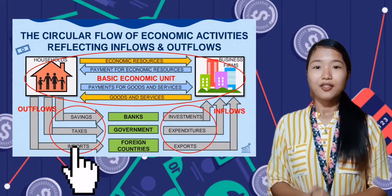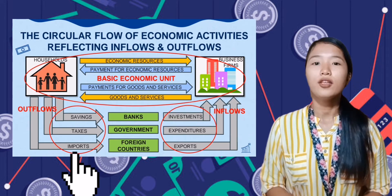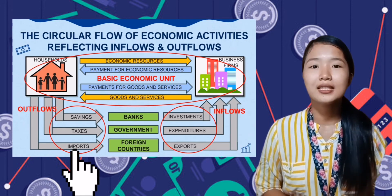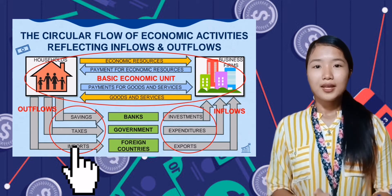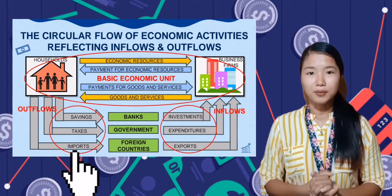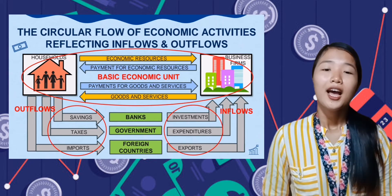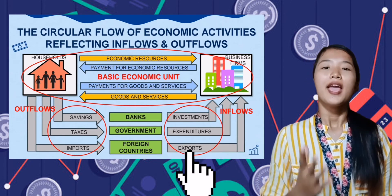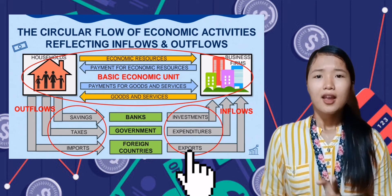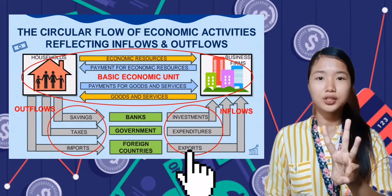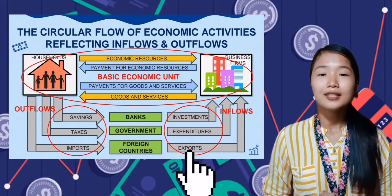These three factors — savings, taxes, and imports — could interrupt or slow down the flow of economic activity within a specific country. Since savings, taxes, and imports are money not being used for consumption, they are not being injected into the economy, classifying them as a leakage. However, inflows such as investments, expenditures, and exports could increase economic activities, because these three factors serve as injections into the flow of economic activity — they act as add factors.